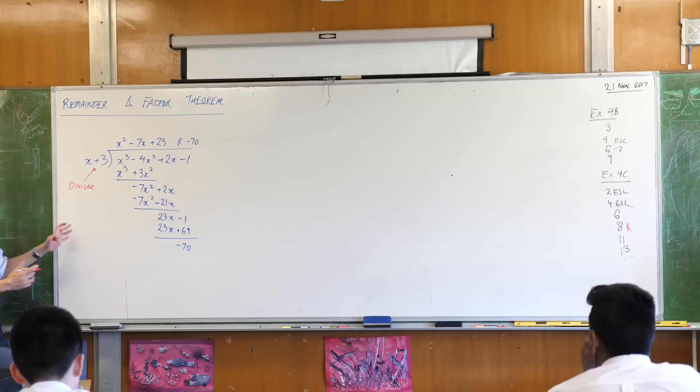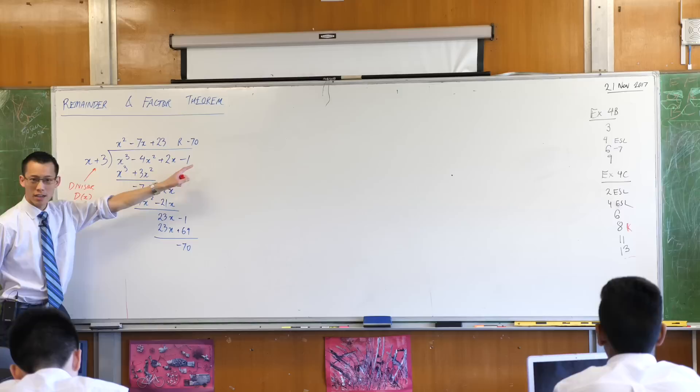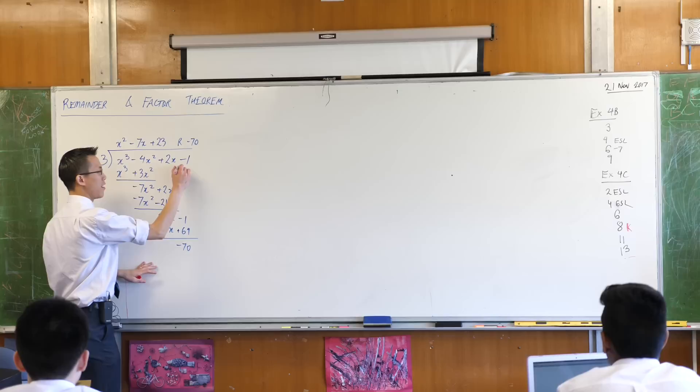Since it's the divisor let's call it D of X. D for divisor. This here, this polynomial, the one being divided by, what's it called?